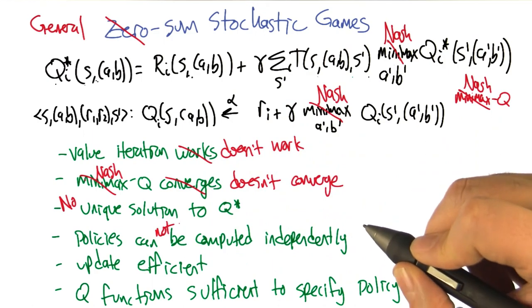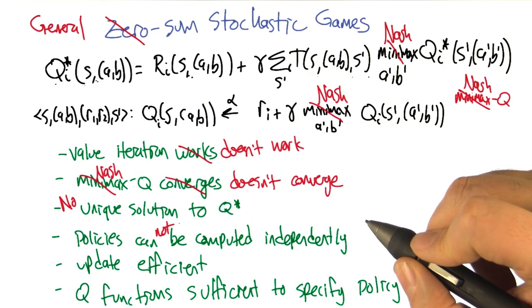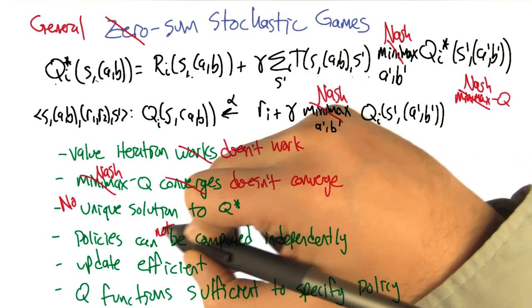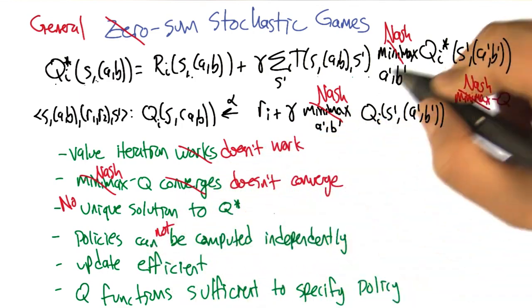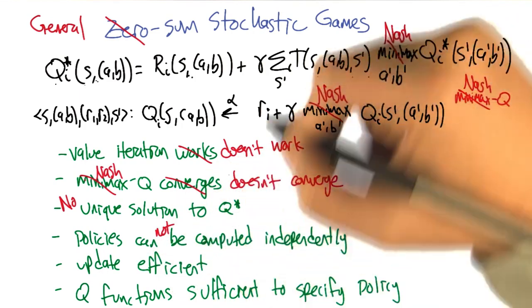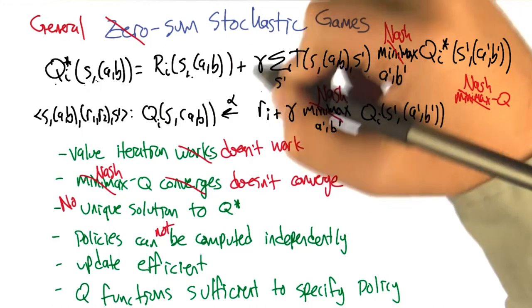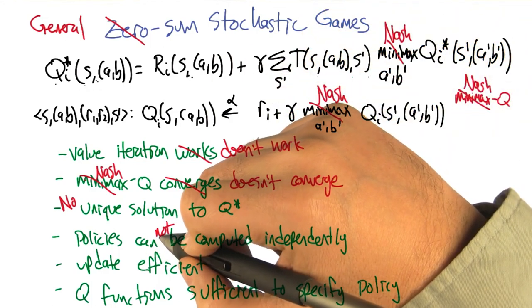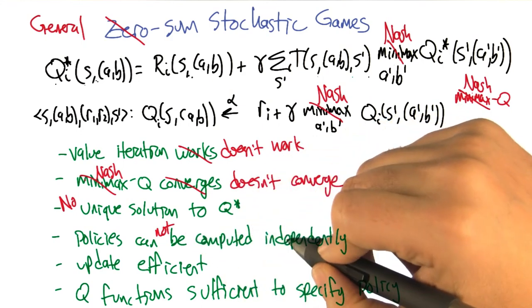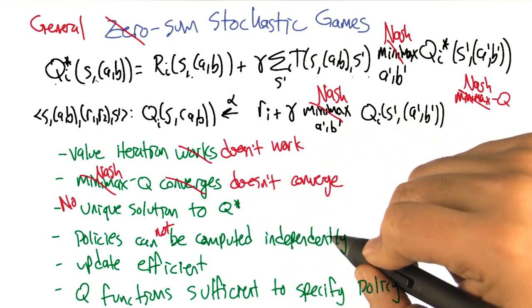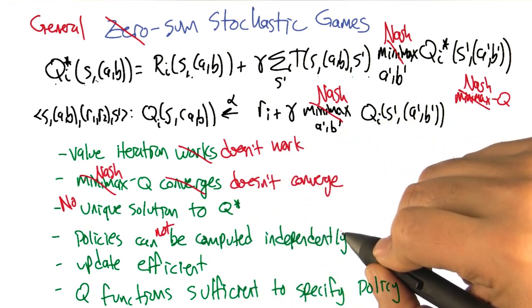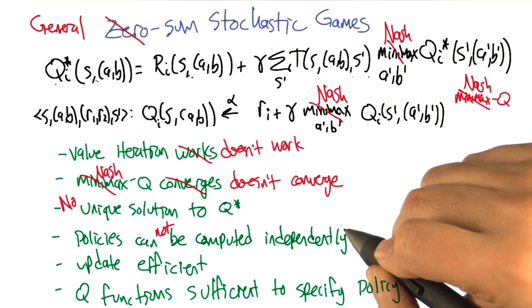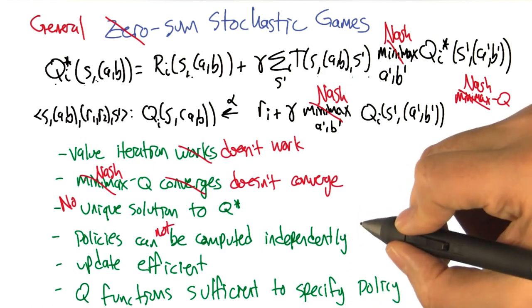The policies cannot be computed independently, right? So Nash equilibrium is really defined as a joint behavior. And so we can't just have two different players computing Q values. Even if we could compute the Q values, it wouldn't necessarily tell us what to do with the policies. Because if you take two different policies that are both half of a Nash equilibrium, two halves of a Nash equilibrium do not necessarily make a whole Nash equilibrium. Because they can be incompatible.